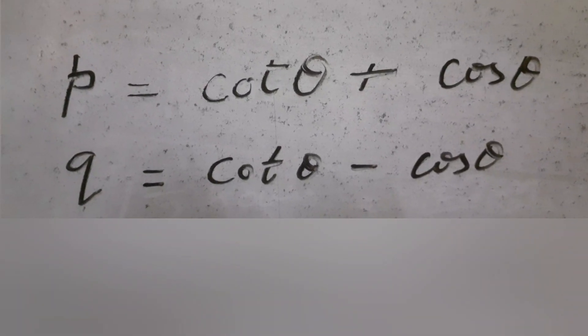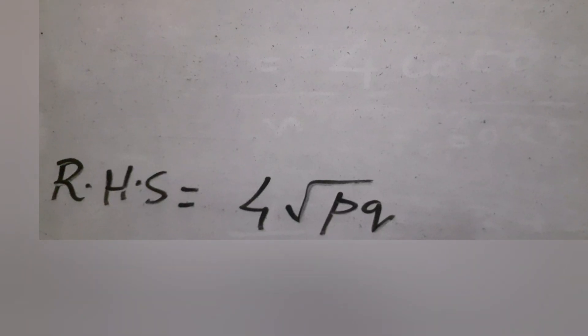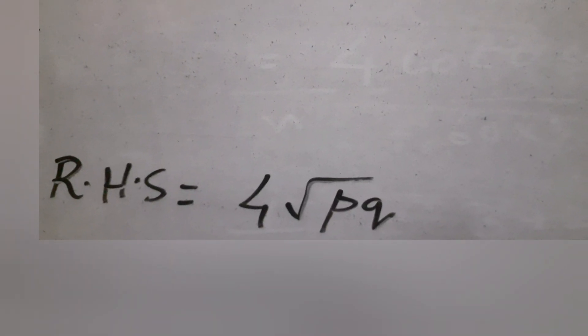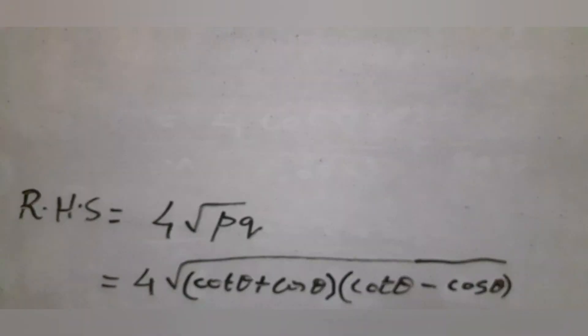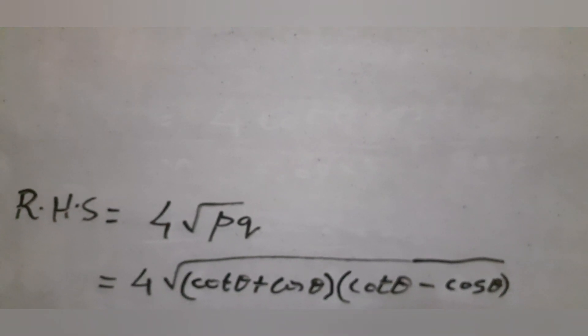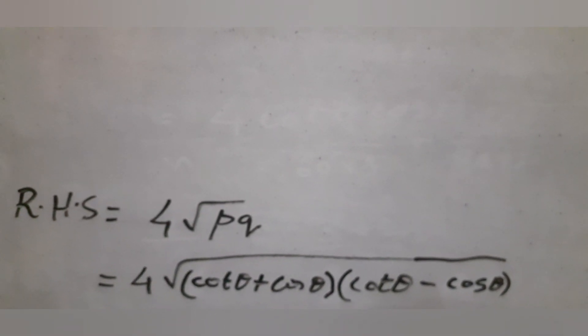Now we start from the RHS, using the given values of p and q. Here we have to use the identity for (a + b)(a - b).